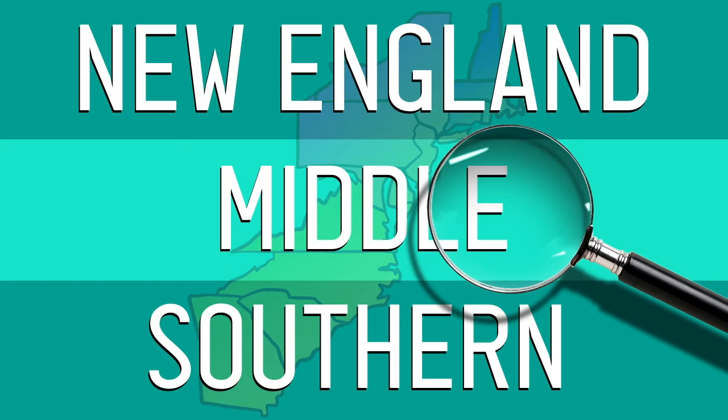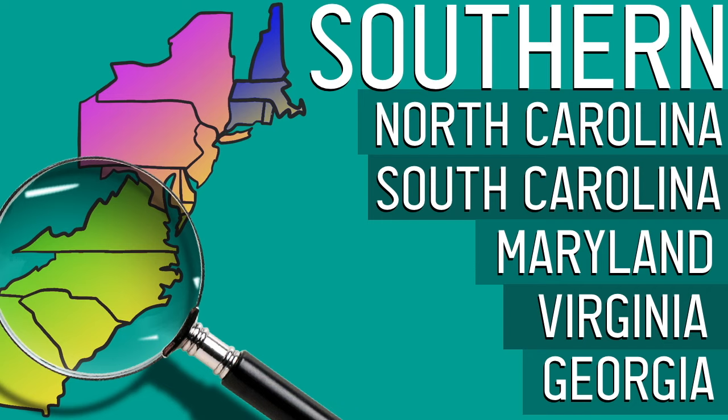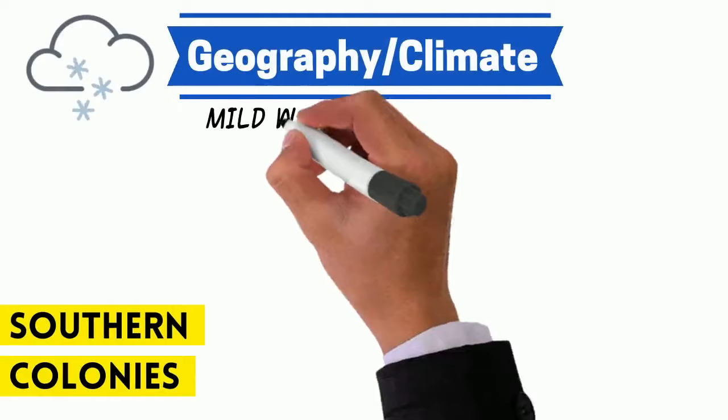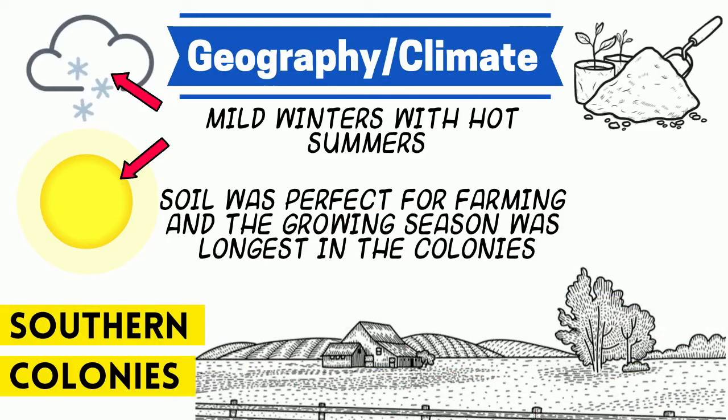Let's move on to the final region: the Southern Colonies. This includes North Carolina, South Carolina, Maryland, Virginia, and Georgia. The Southern Colonies' geography and climate was very different from the other two regions, featuring very mild winters with hot summers. The soil was also perfect for farming, and the growing season was the longest in all of the colonies. Crops like tobacco and cotton grew exceptionally well here.